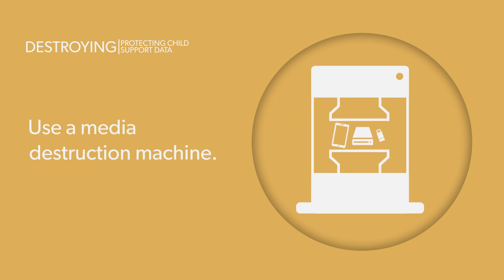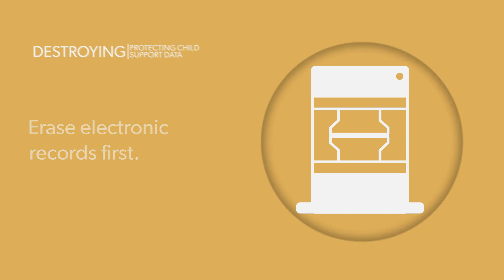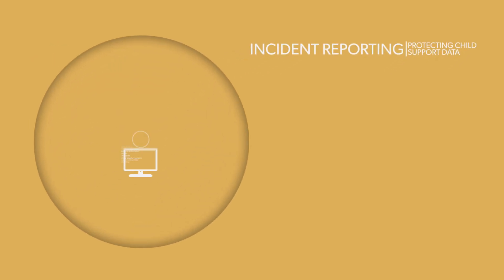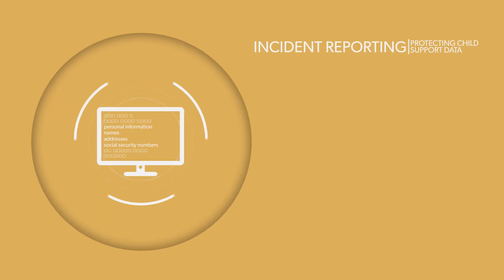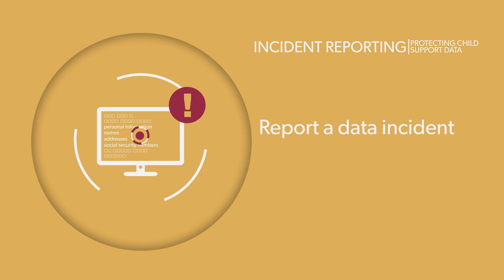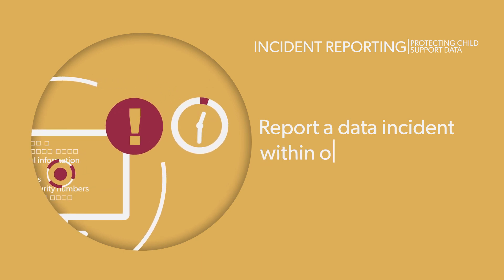Destroying: to properly destroy documents, place them in secured containers and use a crosscut shredder. For electronic media, use a media destruction machine, making sure to erase electronic records first to leave no trace of personal information. Incident reporting: data breaches can harm the integrity and reputation of your agency. You must report a suspected or confirmed data incident to your immediate supervisor within one hour.